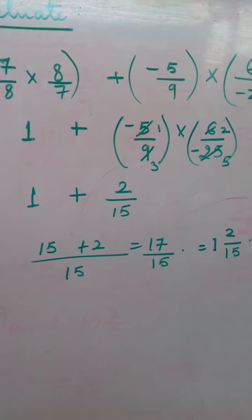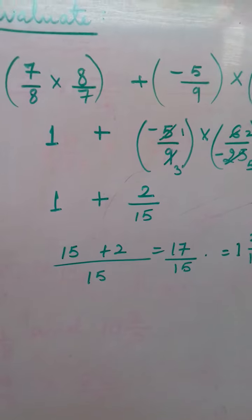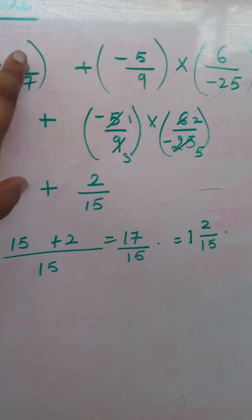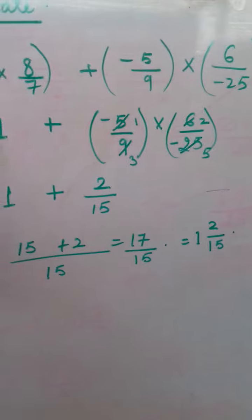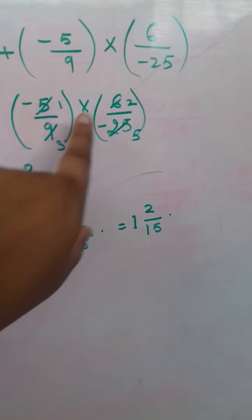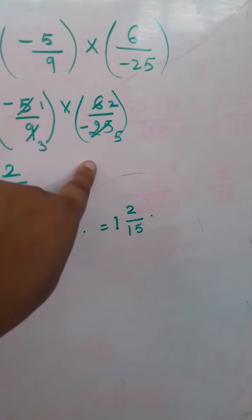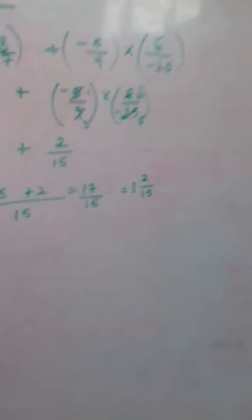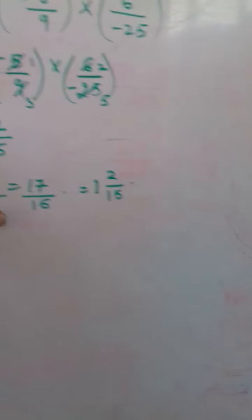Let us solve first, solve the brackets. So 7 cancels 7, 8 cancels 8, so 1 is left over here. Minus 5 upon 9 into 6 upon minus 25, remember BODMAS children, the bracket we have solved.